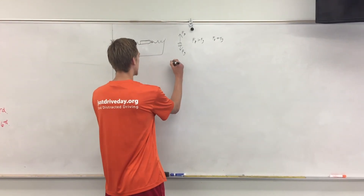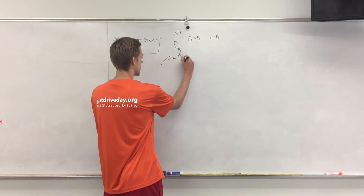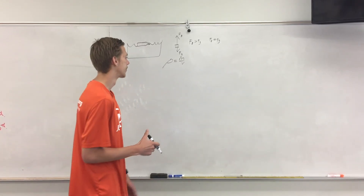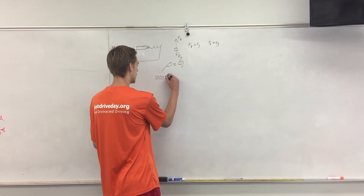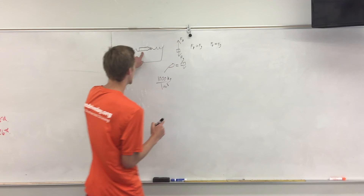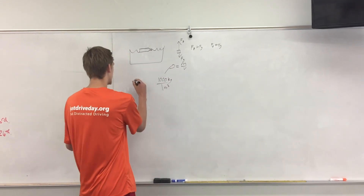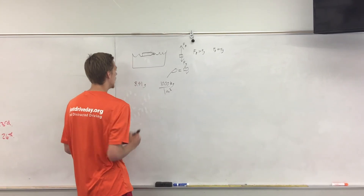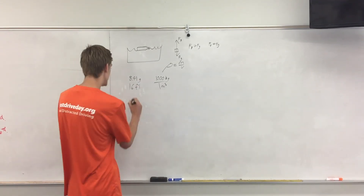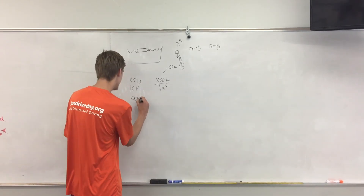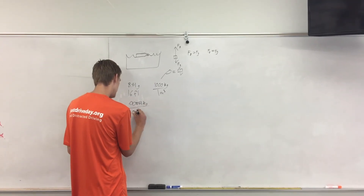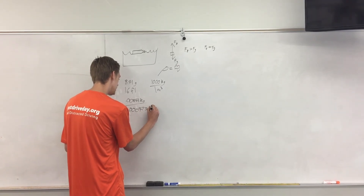So now what we're going to do is take the density — which is equal to mass over volume — of both these objects and solve for how much this water bottle can hold. The density of water is 1,000 kilograms per one meter cubed. What we know is the mass of this water bottle, which we weighed to be 8.41 grams for a 16 fluid ounce bottle. That converts to 0.00841 kilograms over 0.000473 meters cubed.